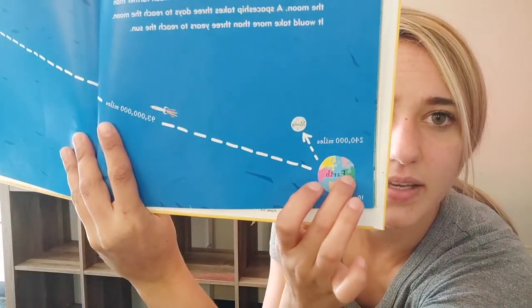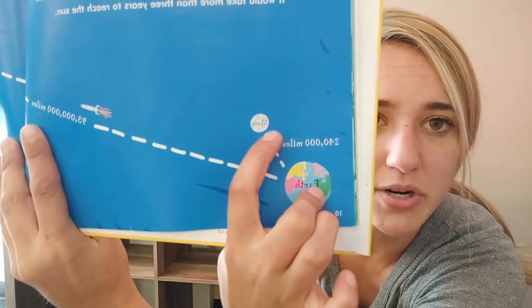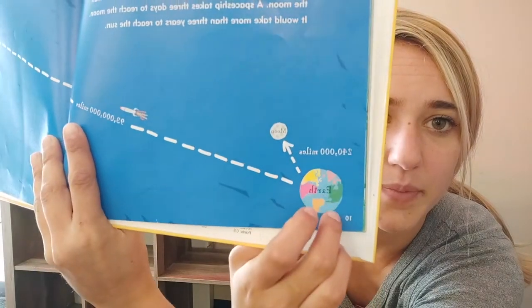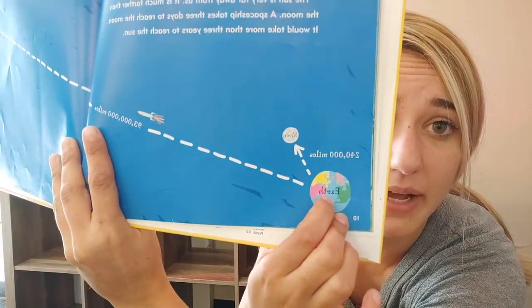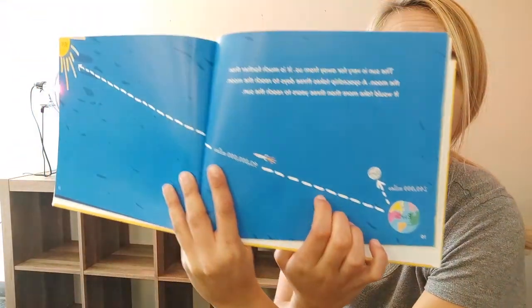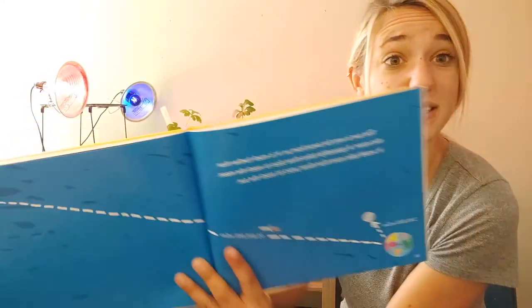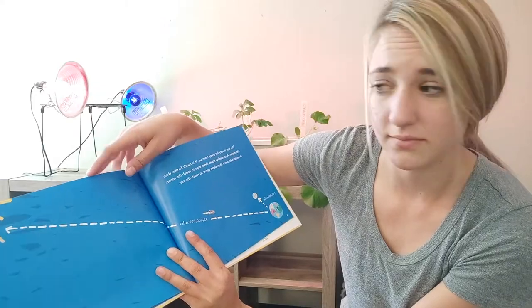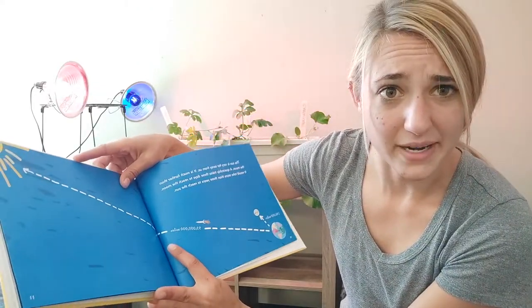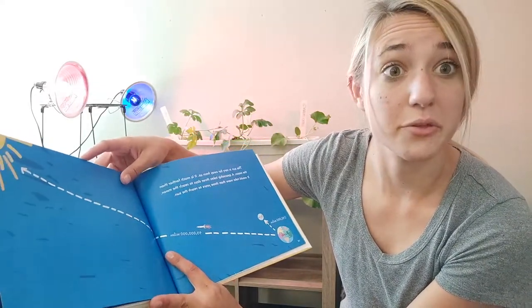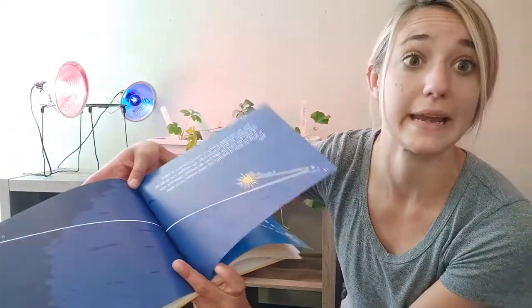Alright, so see here we have the earth and a short trip away is the moon. But if we were to go to the sun, we would have to fly all this distance away. And that would take us three years. So how old are you guys right now? Then add three to that number. That is how long it would take you to get to the sun if you left right now.